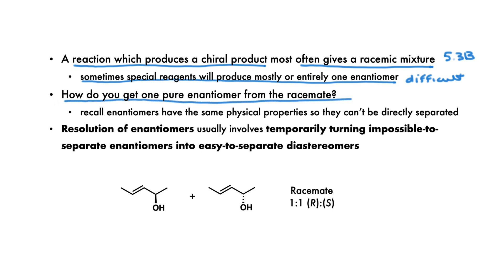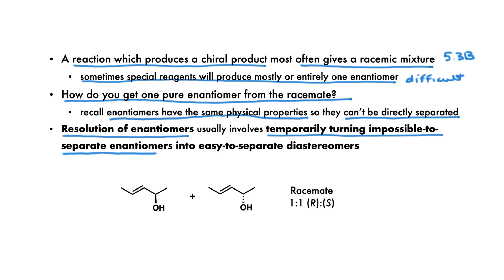Enantiomers have identical physical properties, such as melting point and boiling point, so they can't be directly separated using regular techniques. Resolution of enantiomers — that is, separating enantiomers — usually involves temporarily turning impossible-to-separate enantiomers into easy-to-separate diastereomers.